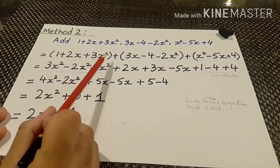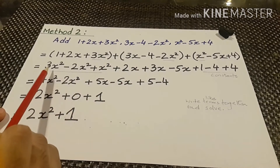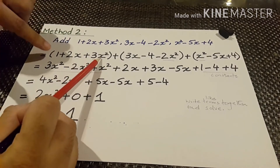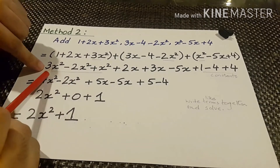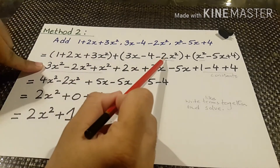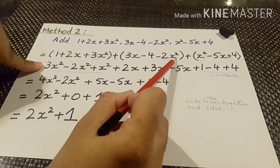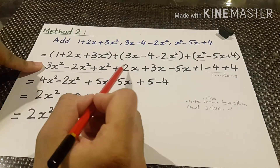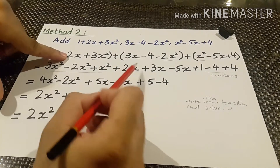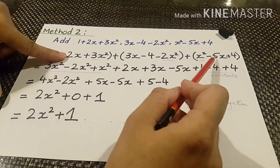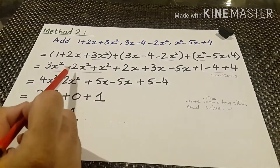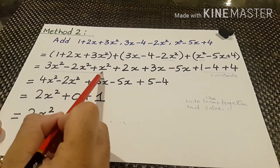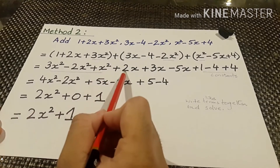We will open the brackets and arrange the values. From the first bracket we have 3x squared, from the second bracket minus 2x squared, from the third plus x squared. Then plus 2x plus 3x minus 5x, and then the constants.